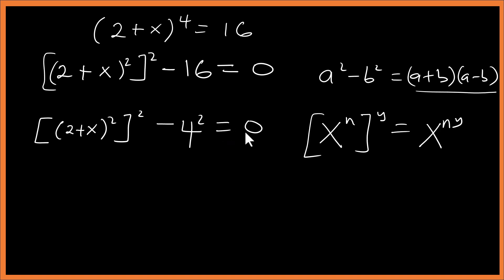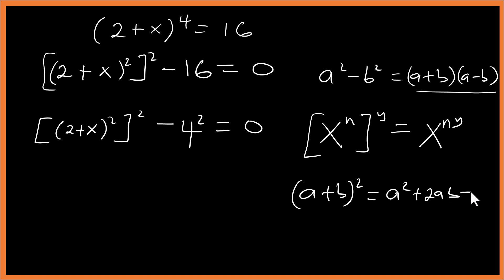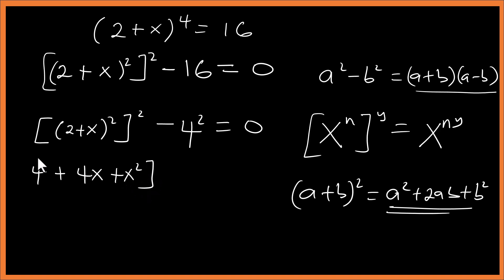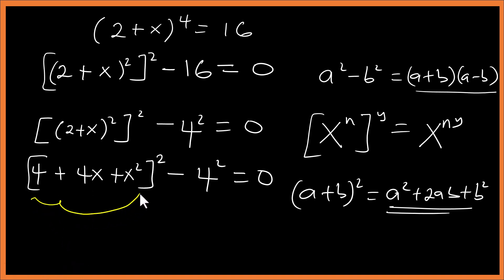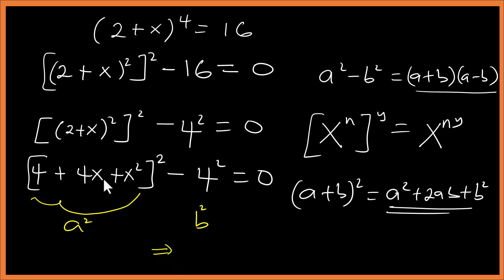Now we have (2 + x) squared minus 4 squared equal to zero. We expand (2 + x) squared using a squared plus 2ab plus b squared, giving us 4 plus 4x plus x squared. So we have (4 + 4x + x²) minus 4 squared, where everything in the first bracket behaves like A and 4 behaves like B.